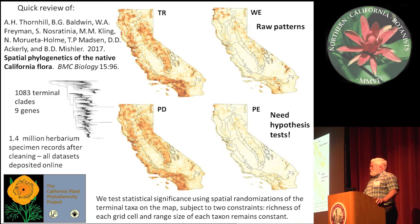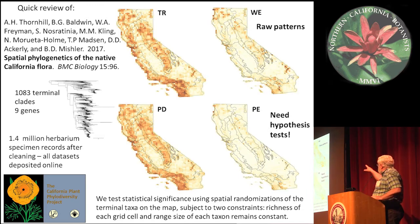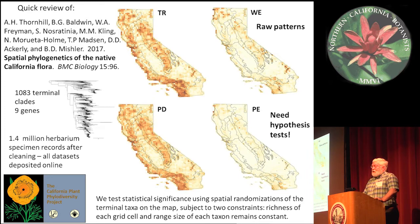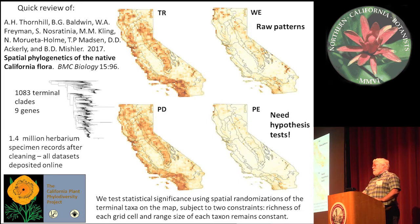PE is a modification of phylogenetic diversity where you weight the branches by the inverse of how widespread they are. So the more range-restricted branches are longer than the ones that are widespread, and then you measure PE on that. These are the raw patterns, but we need to generate hypothesis tests to see whether the patterns we're seeing are interesting or just what you'd expect if taxa lived together at random. So we do spatial randomizations, where we take the data off the map and put it back on randomly with a couple of constraints, to see whether the PD and PE measures we're getting are something remarkable or just the null hypothesis.